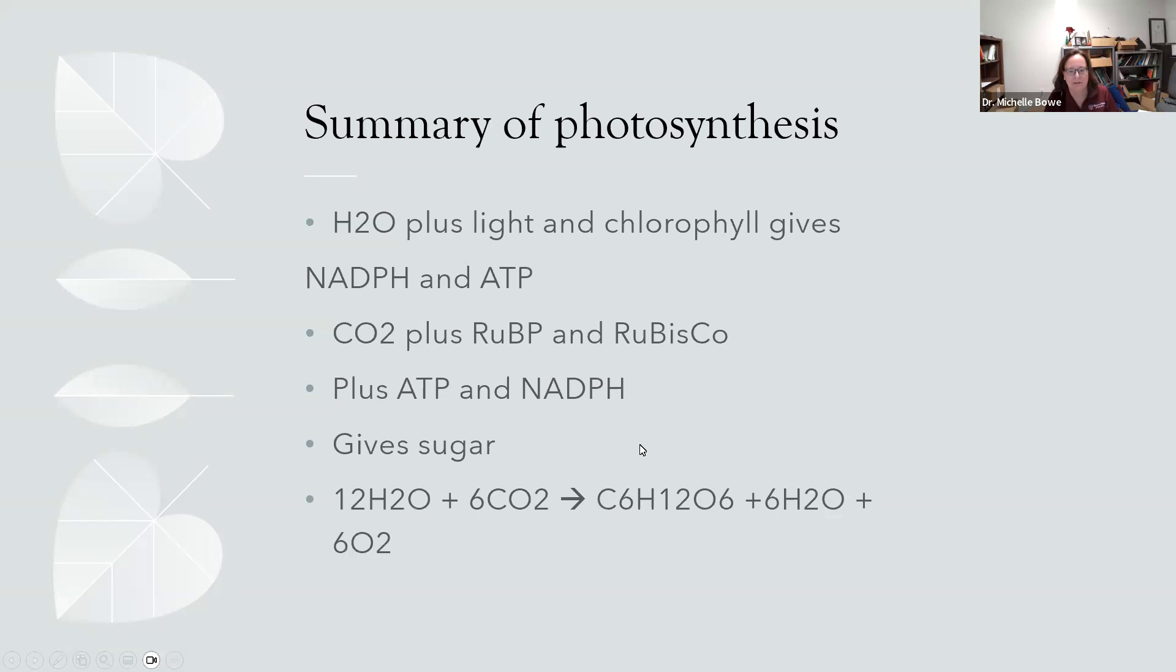That uses up ATP and NADPH to make glyceraldehyde-3-phosphate. The important part is the ATP and NADPH came from the light reactions and are now being used in the Calvin cycle. Glyceraldehyde-3-phosphate then goes on to make sugar, makes one sugar, and then the rest of it goes back into the cycle as ribulose-1,5-bisphosphate again. If you wanted to see what the actual chemical formulas look like, we really start off with 12 waters, 6 carbon dioxide, and that gives us 1 glucose plus 6 water and 6 oxygen. So notice that oxygen is a byproduct of photosynthesis.